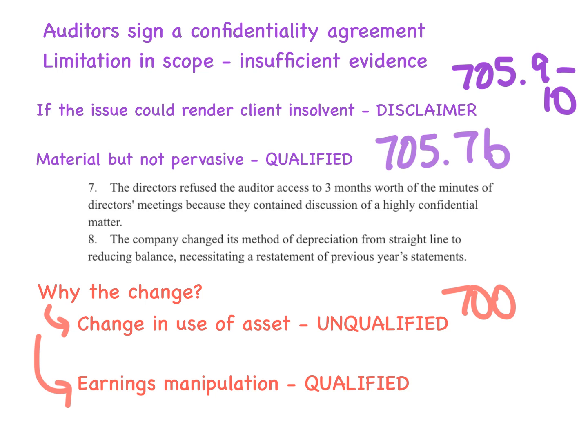If the asset is being used differently, we go under ASA 700, paragraph 16. Otherwise, if there's intentional manipulation, we've got a disagreement with management, which is ASA 705, paragraph 7A. So that is our summary of the opinions and how we would make our disclosures. Always use paragraph references as specific as possible, and provide lots of detail in your explanations.